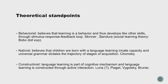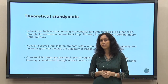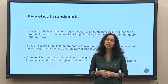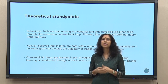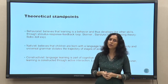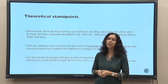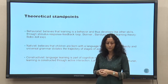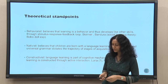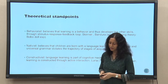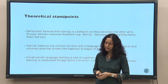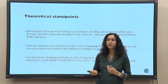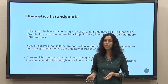Then we will move on to nativist theory of language, which primarily owes its existence to Chomsky — Noam Chomsky — who opined that children are born with a language learning faculty, the language acquisition device (LAD), which he later called universal grammar. We are all hardwired to learn language; it cannot be taught to us. And then we will move on to constructivists, who believe language learning is part of a general cognitive mechanism and is constructed through interaction. Here we will discuss Luria, Piaget, Vygotsky, Brunner, and so on.